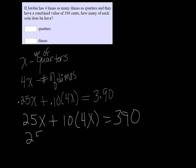Alright, so multiplying the 10 times 4X I have 40X. And then 25 and 40 is 65X equals 390.